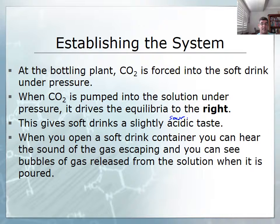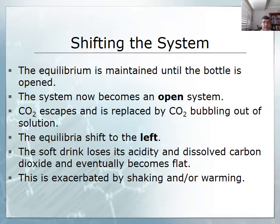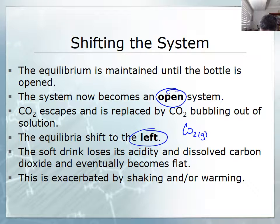When you open the container, you hear the sound of gas escaping and you can see the bubbles of gas releasing from the solution when it's poured. That opening of the container creates an open system, and it allows gas to escape, which decreases the pressure above the liquid and means more carbon dioxide is going to come out of solution to reform carbon dioxide gas. The system becomes open when the cap's off and the equilibrium shifts to the left — carbon dioxide gas is produced from what was in solution. If you leave the top open, the soft drink will eventually lose all of its dissolved carbon dioxide and acidity, and we call that becoming flat.